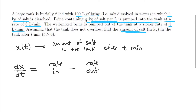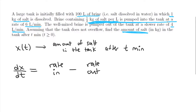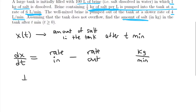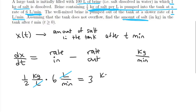For the rate going in, we're actually given this in the question. The brine has concentration one half kilogram per liter, and it's being pumped in at a rate of six liters per minute. We want to find the rate of amount of salt — in other words, kilograms per minute. So dx/dt has units of kilograms per minute, and we multiply: one half kilograms per liter times six liters per minute. The units of liters cancel out, and we end up with three kilograms per minute — that's the rate of salt coming in.